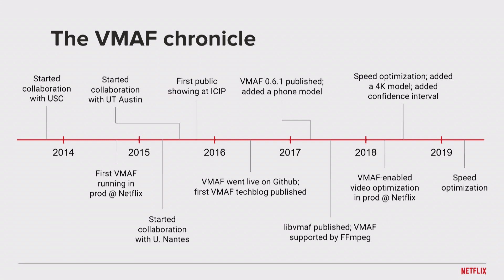In 2017, we had our first major algorithm revision, bumping the version to 0.6.1, and we also added a phone model more suited for mobile cellular phone viewing conditions. In early 2018, we had our first VMAF-enabled video optimization framework running in production at Netflix, generating VMAF-optimized video streams. We performed speed optimization, added a 4K model, and quantified the VMAF confidence interval to better reflect the accuracy of its performance. In 2019, we had a second round of speed optimization reducing the running time by 40%.